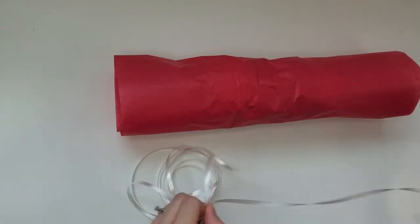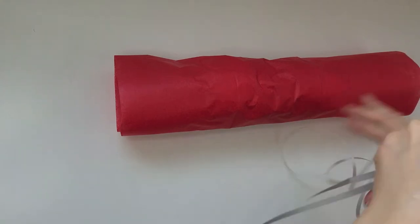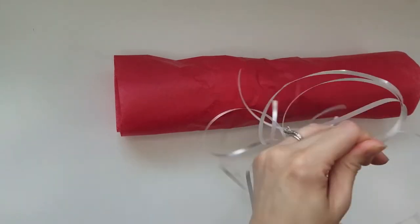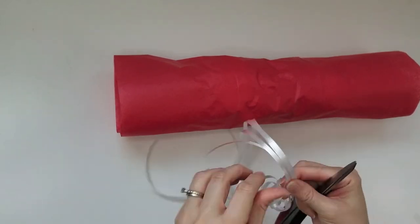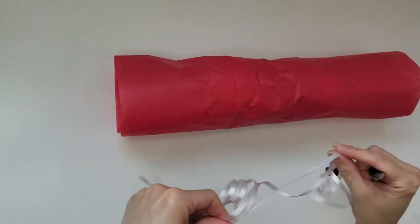Take your ribbon and cut off generous strips. Then curl them. You can either curl them before you tie it or after. Honestly, I think it's easier to curl it after you tie it. So maybe don't do what I'm doing right now.